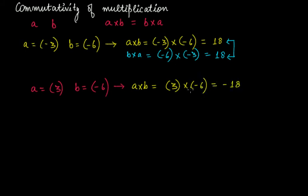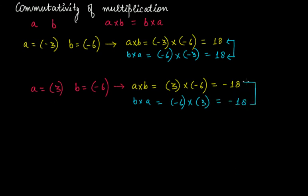Three times minus six gives minus 18, because only one negative integer is involved, and since one is an odd number, you get a minus sign in the result. What about b times a? Minus six times three again gives minus 18. These two outcomes are the same, so from both examples we can confirm that a times b equals b times a — two integers are commutative under multiplication and follow the commutativity of multiplication.